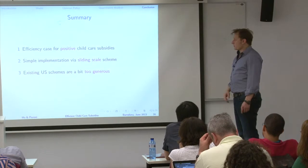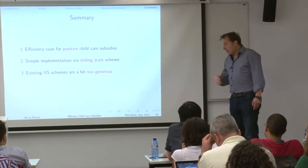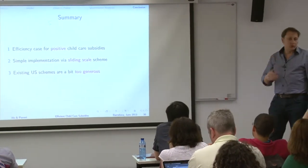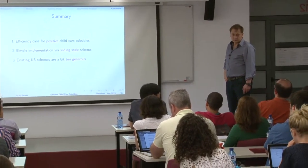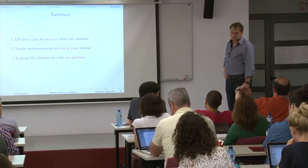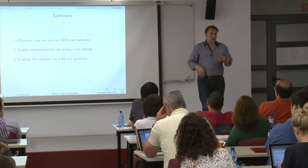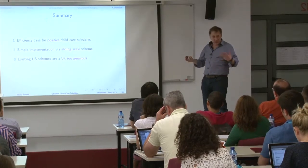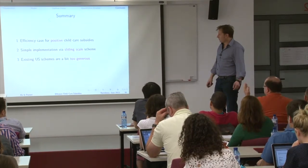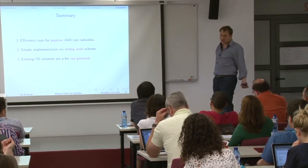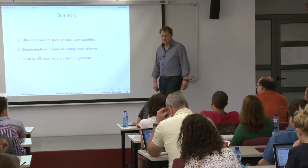To summarize the three points: positive childcare subsidies, a sliding scale makes sense, and existing ones appear a bit too generous — although what people actually receive in practice is much less than what the books say due to low take-up rates. Only a small fraction actually takes up the subsidy, which matters for the calibration. Why people don't take it up is not a question addressed in this paper.